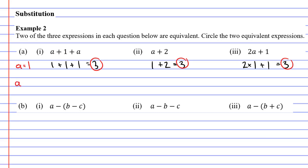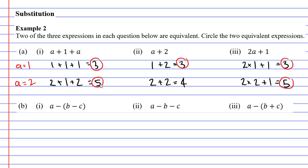Let's try a equals two. For our first expression, a plus one plus a: two plus one plus two equals five. For our second expression, a plus two: two plus two equals four. You'll notice this time they are different. For our third expression, two a plus one: two times two plus one equals five. The first and third expressions gave the same result, but the second gave a different result. So the equivalent expressions are the first and third, since the second is definitely not equivalent to the other two.